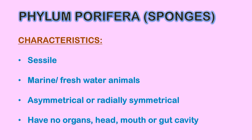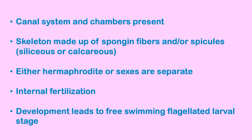Sponges are attached to certain substrates. Their habitat is both marine and freshwater. They are commonly asymmetrical, but if symmetry is present, then they are radially symmetrical. They are very simple animals having no organs, lout, or gut cavity, as proper tissue organization is absent in them.